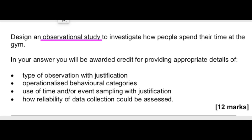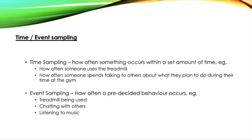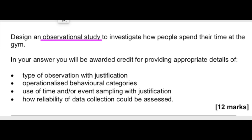Next, you are asked to use time or event sampling with justification. Time sampling is where you choose a set amount of time — for example, five minutes — and record how often a behaviour occurs within that interval. Event sampling is where the researcher chooses in advance what type of behaviour to observe and marks down, usually as a tally, how often those behaviours are seen; behaviours not originally noted are ignored. You can go with either, as long as you justify your decision and give examples, such as the interval length or the specific behavioural categories.